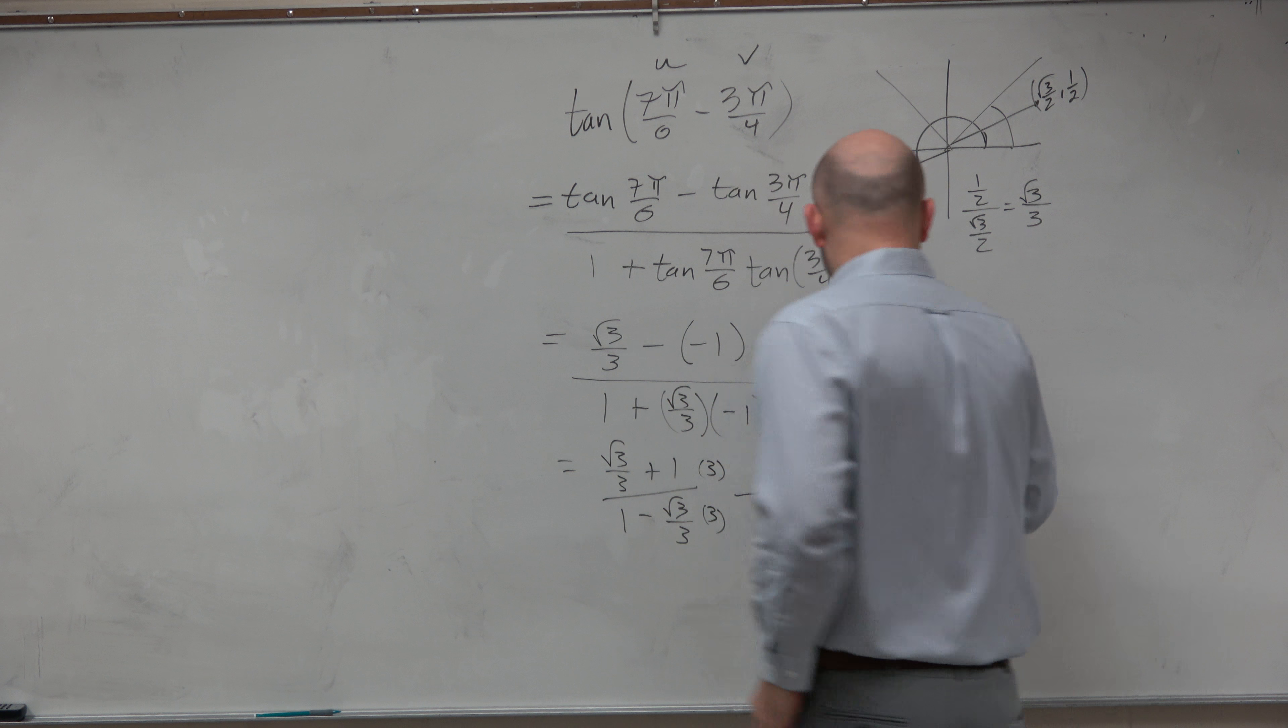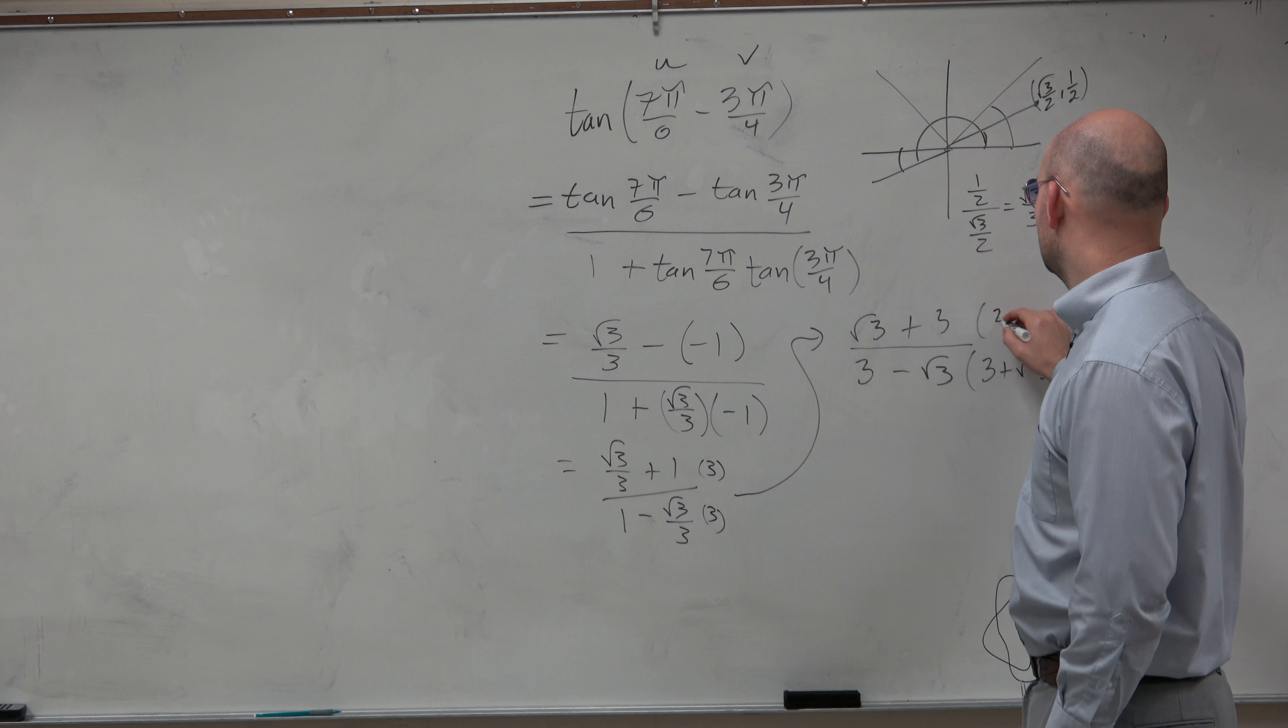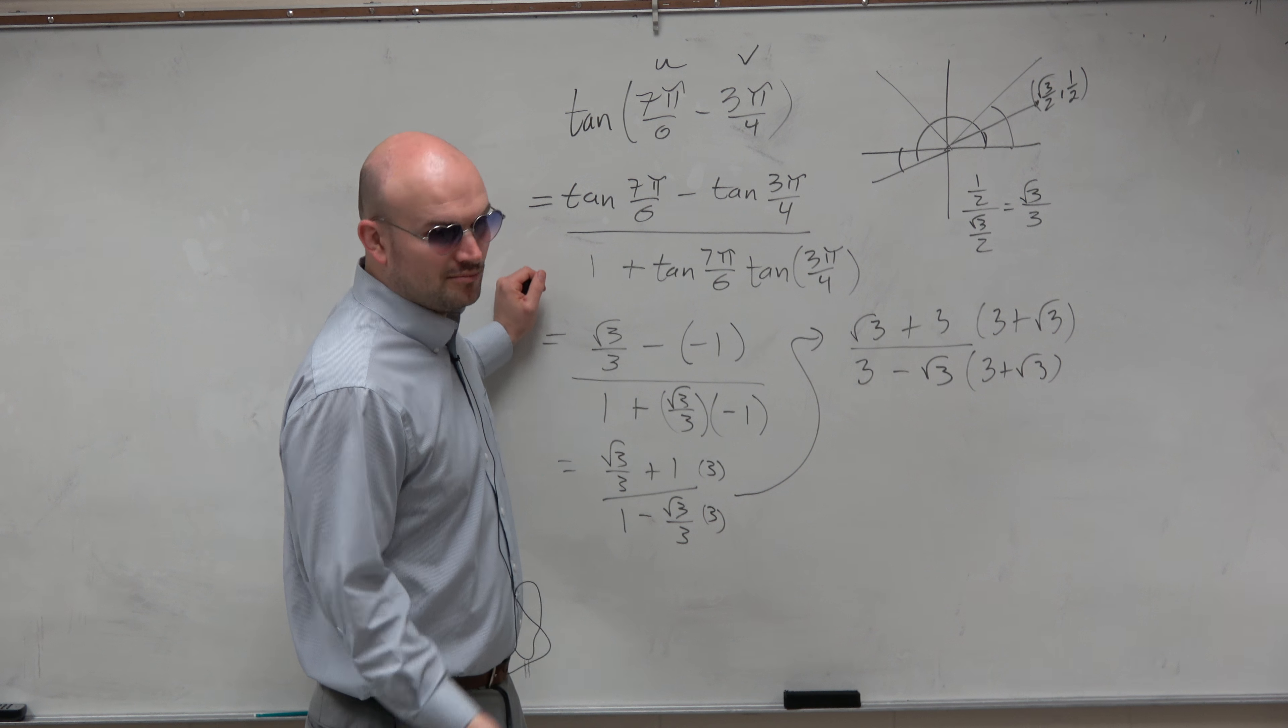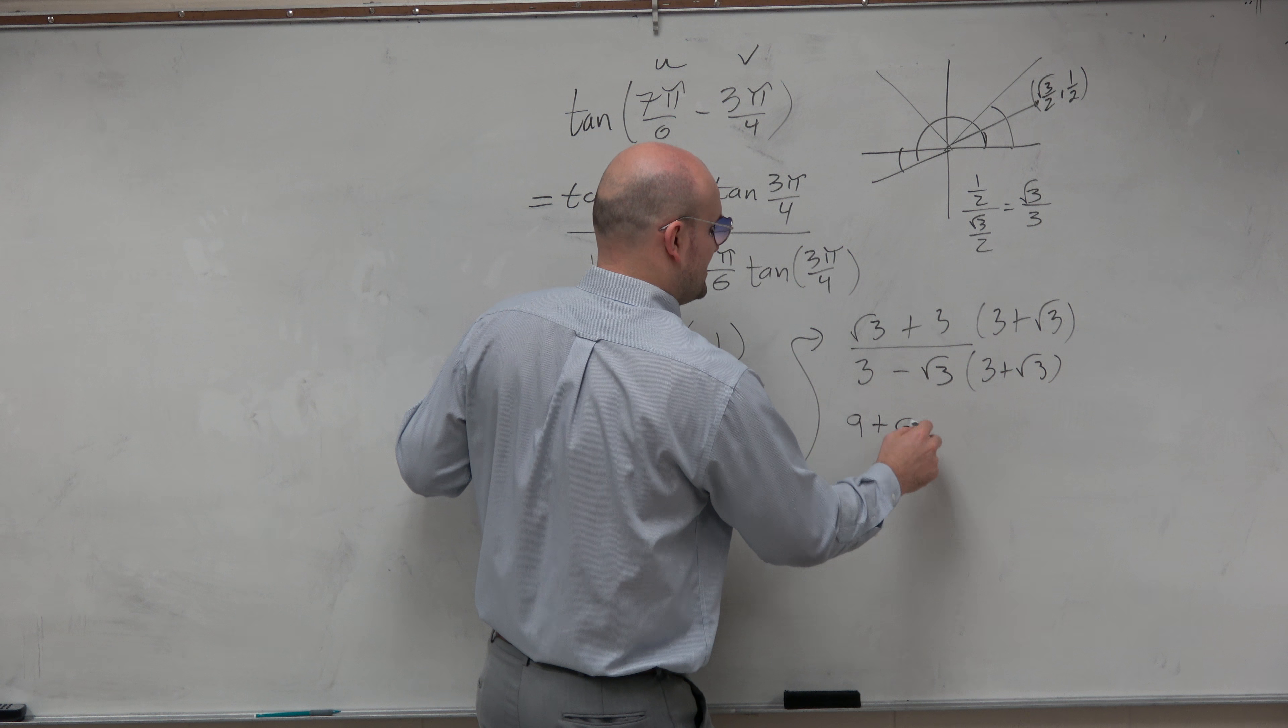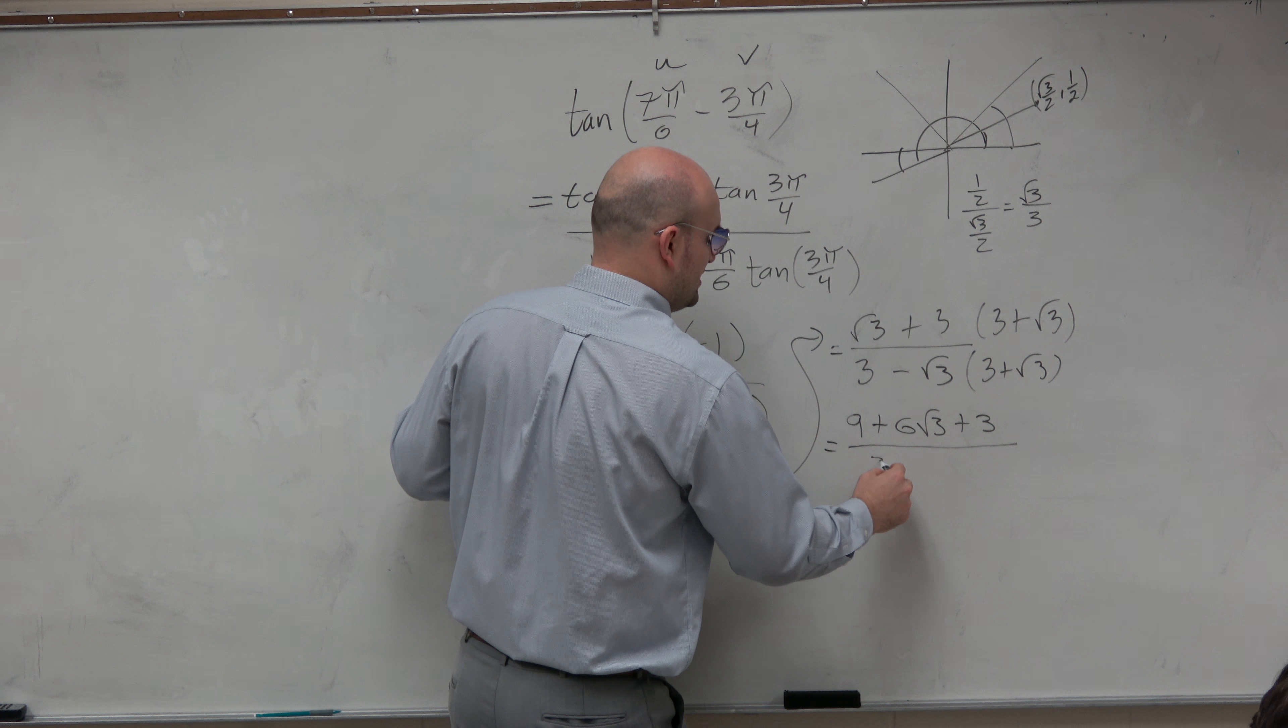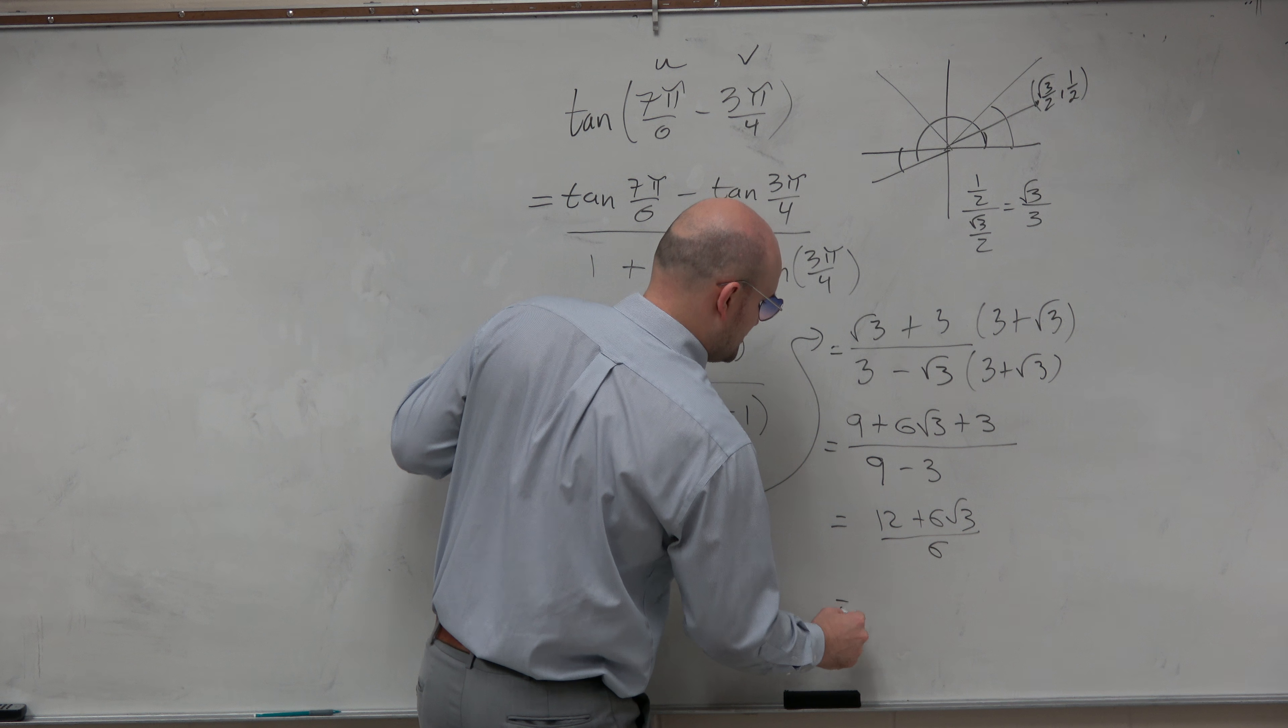And then the next thing I need to do is, if we're going to simplify this a little bit further, we can multiply by the conjugate. And then the point that I want you to be able to do is, rather than have to foil this out step by step, you should be able to do this multiplying the same terms in your head. So therefore, that's going to give you 9 plus 6 square root of 3 plus 3. And then in the denominator, that's going to be 9 minus 3. And that simplifies to 12 plus 6 square root of 3 over 6, which simplifies to 2.